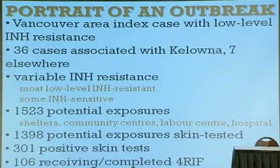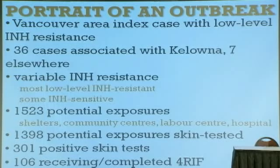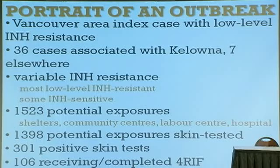Interestingly, in the Kelowna outbreak we do see a mixed resistance phenotype — most people have low-level INH resistance, but some are still sensitive. We have really extensive social network data on all of our active cases and contact data for the majority of potential exposures — people who through their attendance at shelters, community centers, or hospitals would have been exposed to an active case. We followed them quite extensively, including serial skin testing, so we know when somebody may have had three negative skin tests and then suddenly converted to a positive. We have just over 300 positive skin tests so far, of which about a third are receiving preventative therapy.